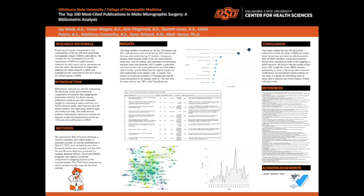Now I'm going to turn it over to Kyle. The methodologies of our study are as follows. We searched the Web of Science database, which is a selective reference and citation index of scholarly journals. All articles published up to March 7, 2023 were included. The returned articles were screened and data from the top 100 most cited publications were extracted in a mass duplicate fashion. R and RStudio programs were applied to perform a comprehensive mapping analysis of all the studies, and the VOSviewer program was used to produce our overlay maps for keyword analysis, as seen on the right in the middle of the screen.